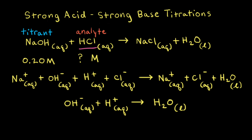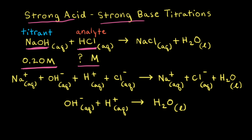Hydrochloric acid is an example of a strong acid and sodium hydroxide is an example of a strong base. Let's say we are titrating an unknown concentration of hydrochloric acid with a known concentration of sodium hydroxide — let's say 0.20 molar. Because we know the concentration of sodium hydroxide, we call that the titrant, and because we don't know the concentration of hydrochloric acid, we call that the analyte.